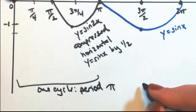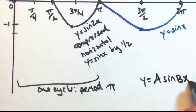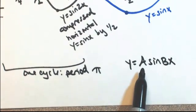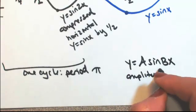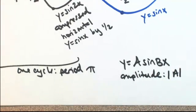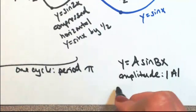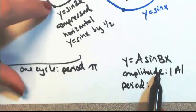So what we can say in general is if we have y is equal to, let's put the a in front of there, sine bx. The amplitude deals with the a. Now keep in mind if this is negative, it's just going to flip over the x-axis. So let me put an absolute value on there.